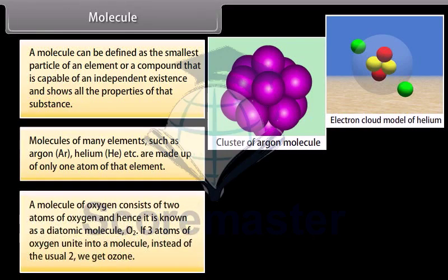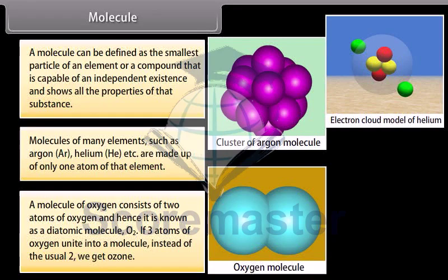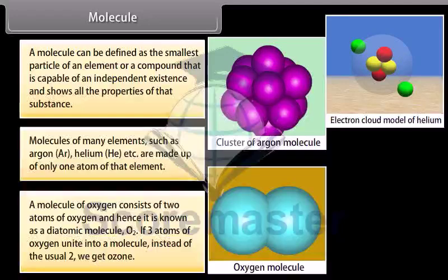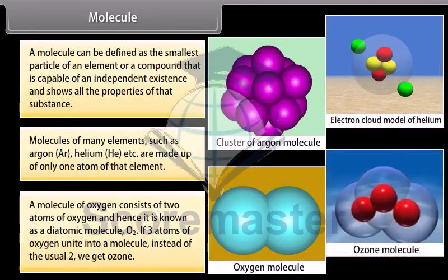A molecule of oxygen consists of two atoms of oxygen and hence it is known as a diatomic molecule, O2. If three atoms of oxygen unite into a molecule instead of the usual two, we get ozone.